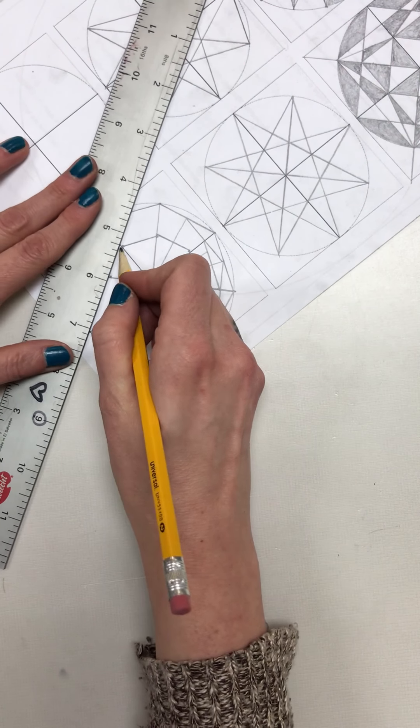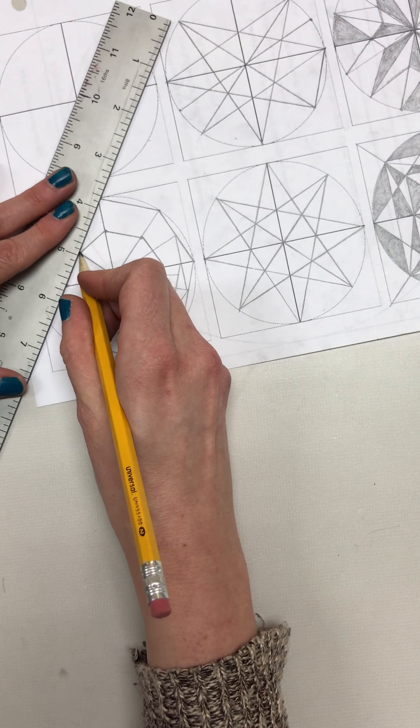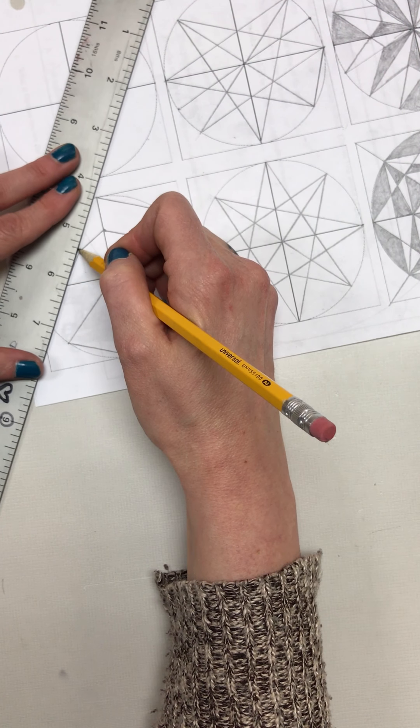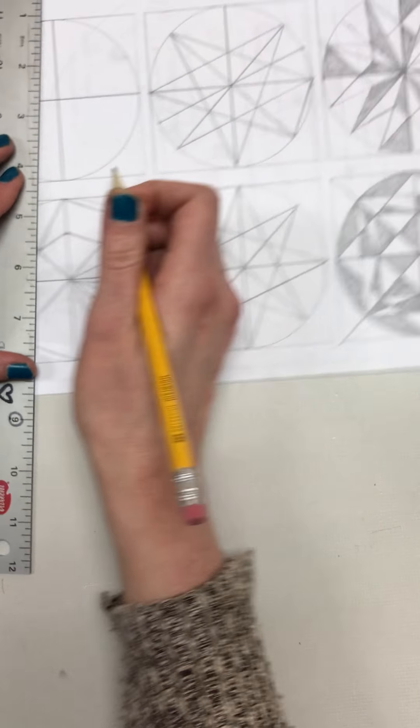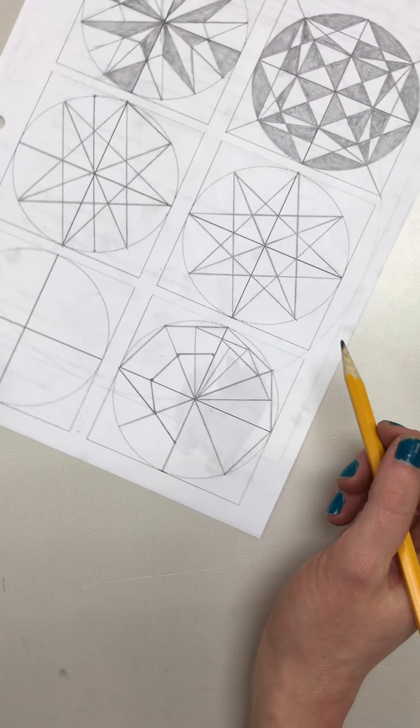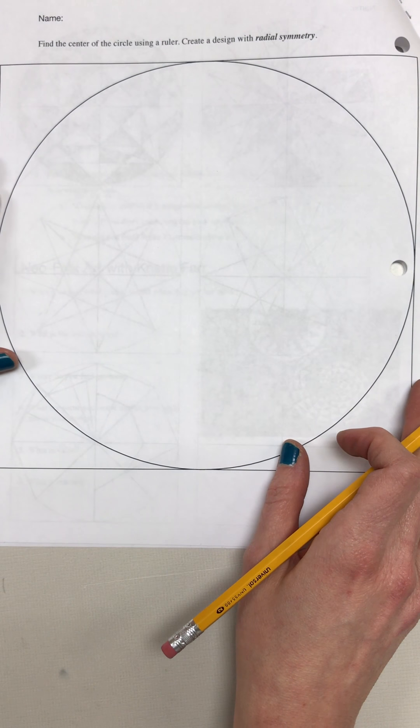So you're just finding different places where you can connect your lines. Once you have an idea of the design that you like the most, you're going to actually measure it out on this one on the back.